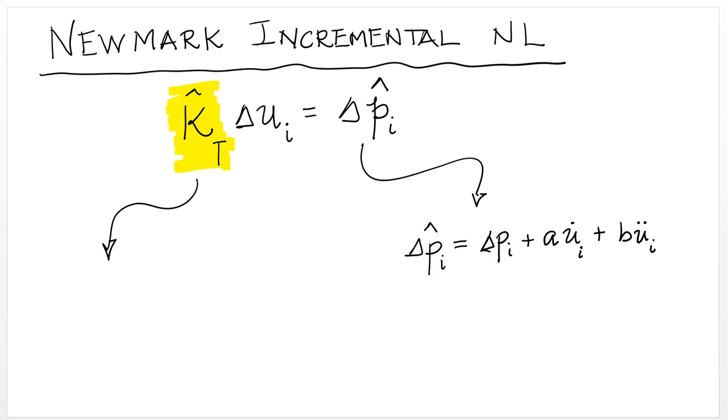So delta P I is independent of the restoring force, which makes it very convenient because that basically is the total load that we need to equilibrate at every time step.